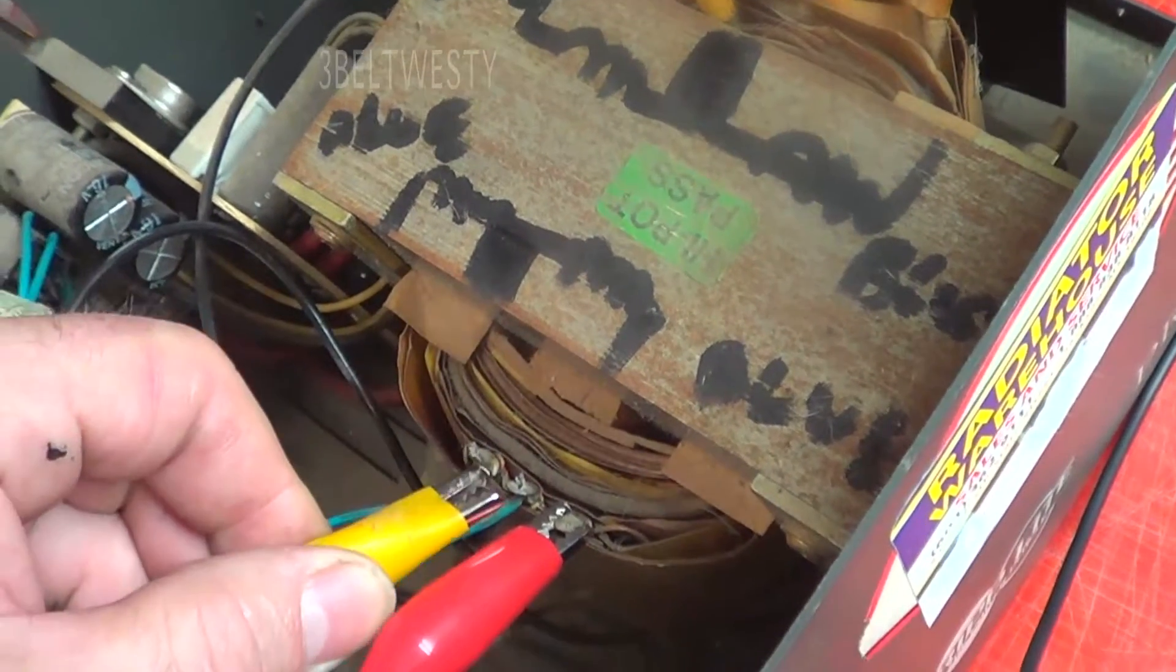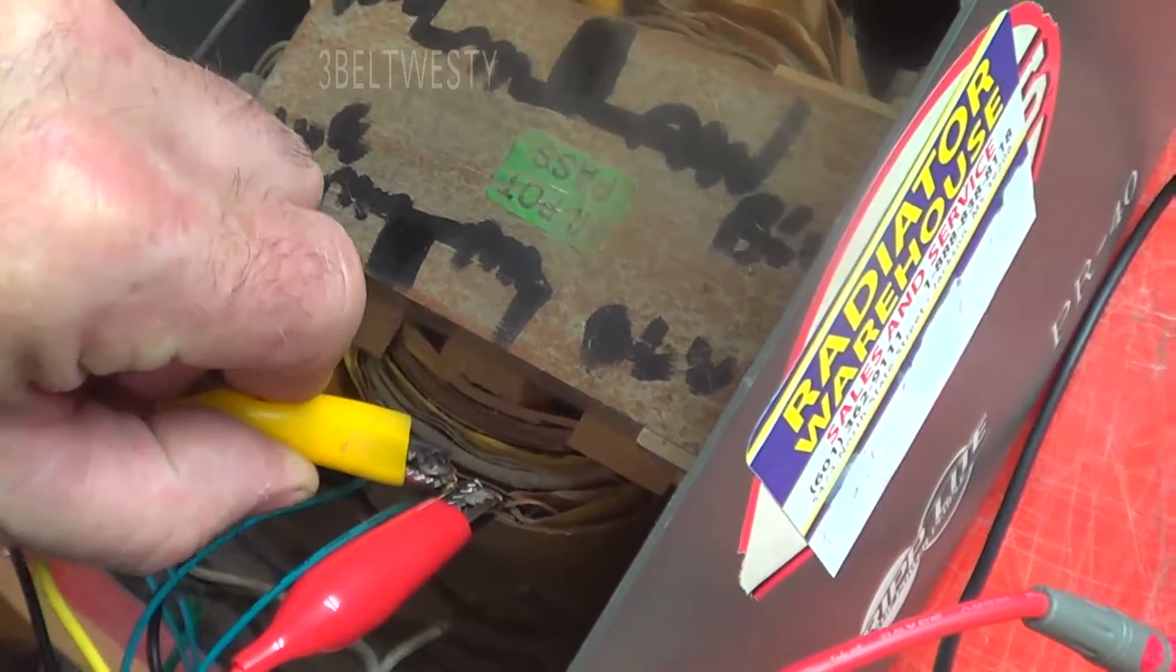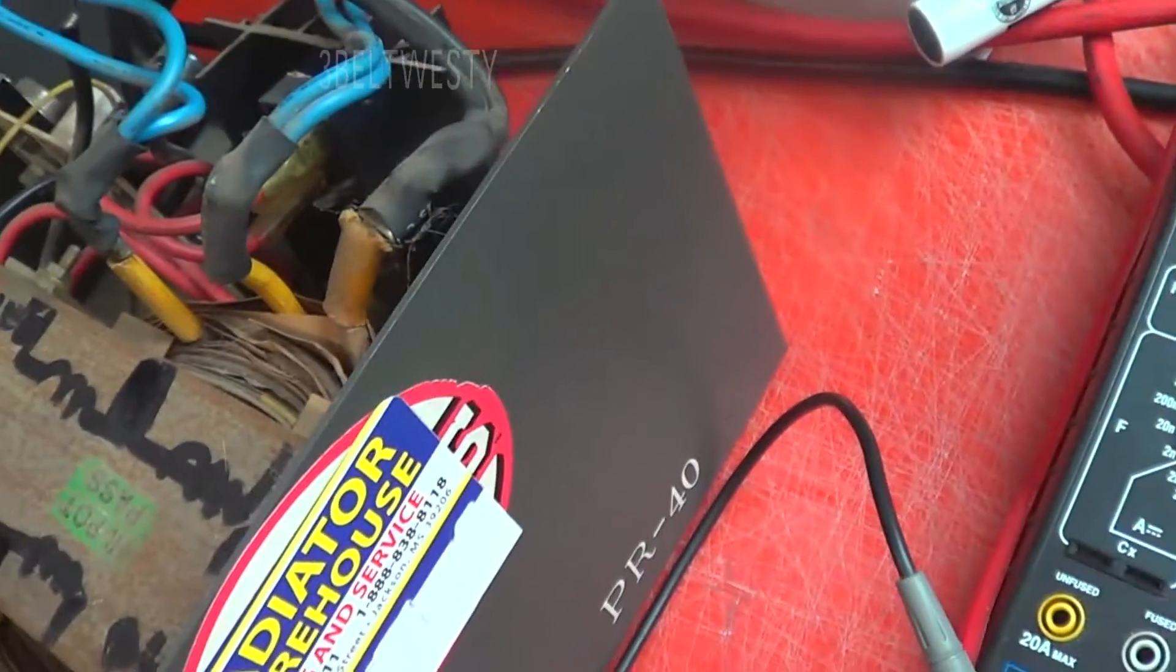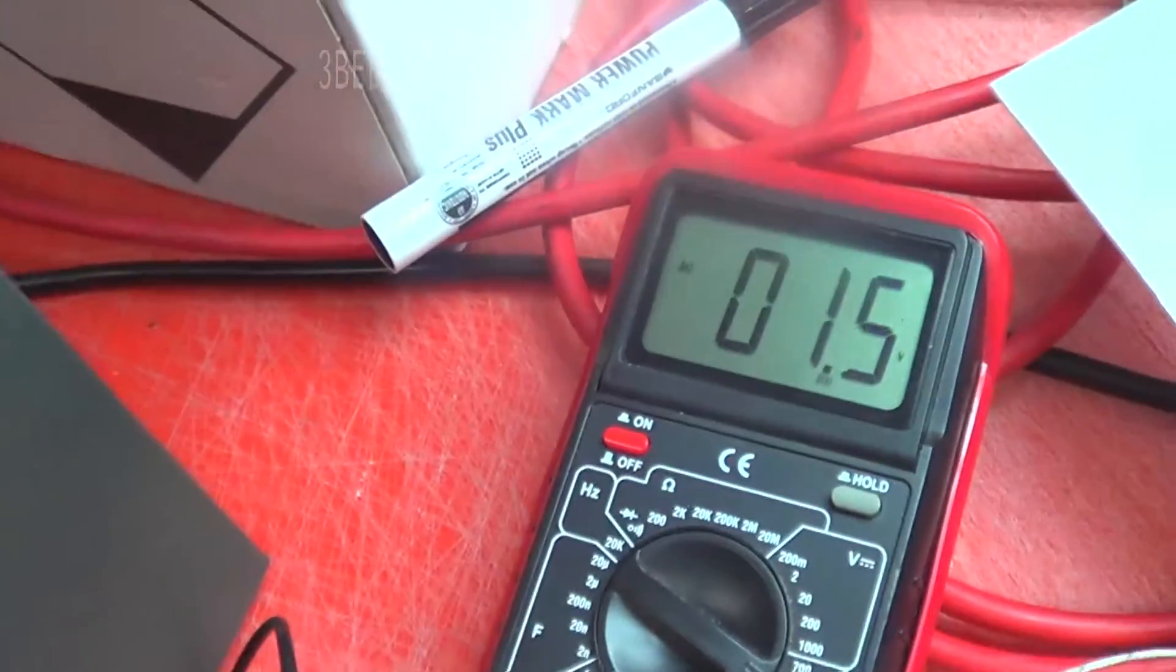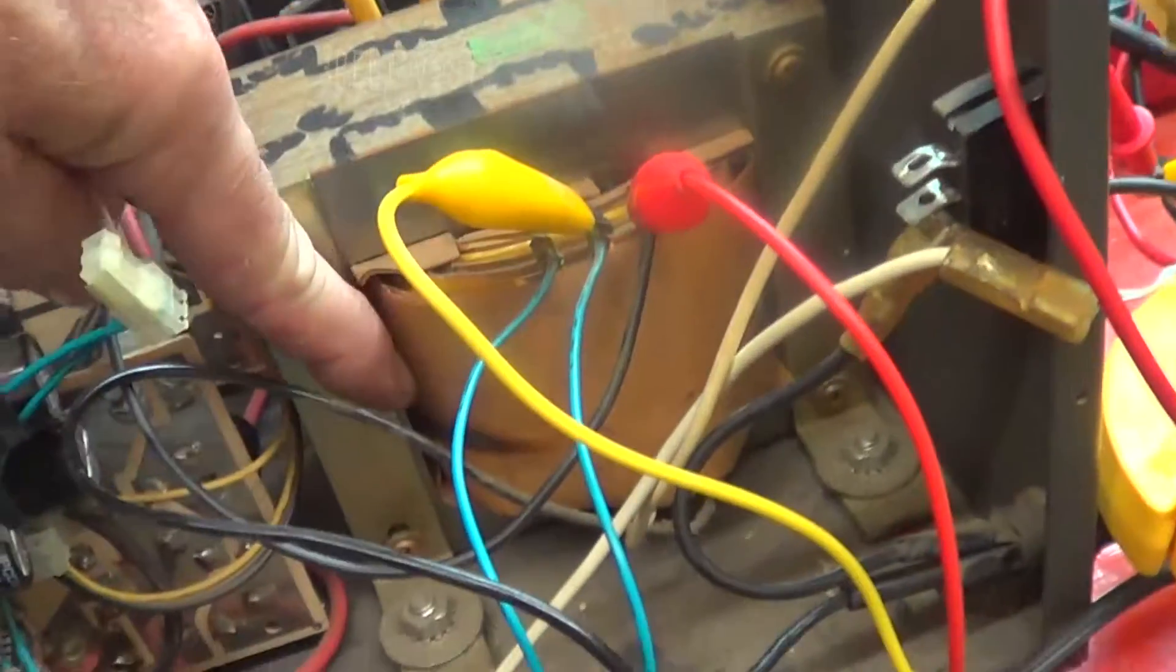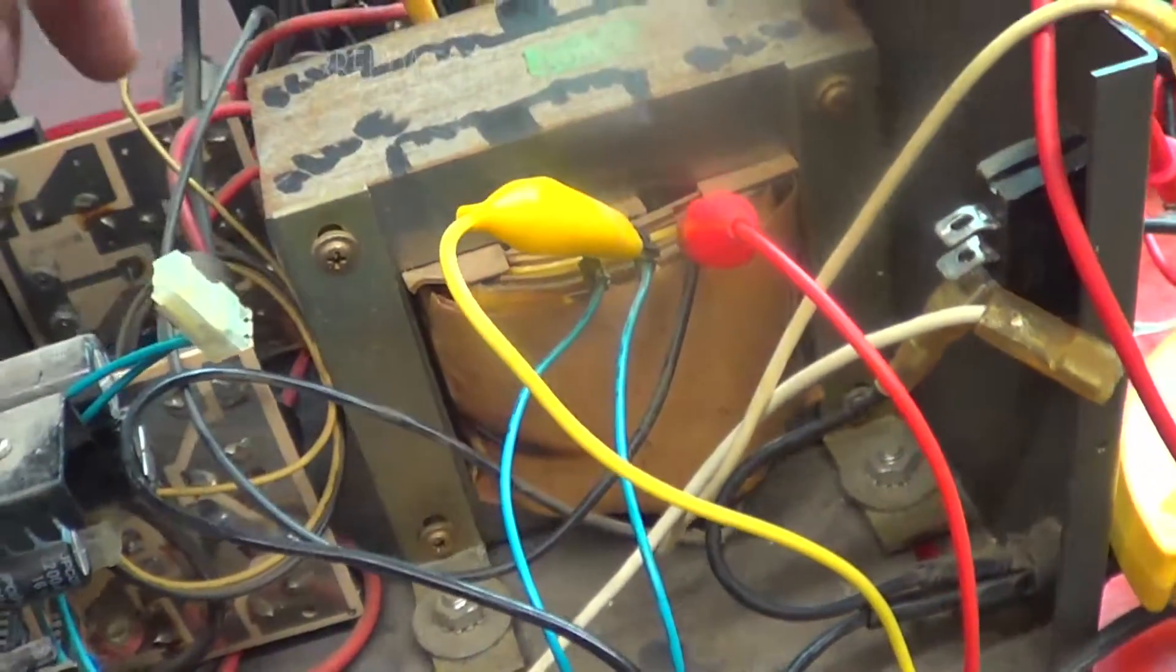I'm going to go ahead and put this on this tap. Now if I short this out, it could be exciting. 3.1. There's only 1.8. So what happens, the outer winding on here, that's what this is. It's screwed up.